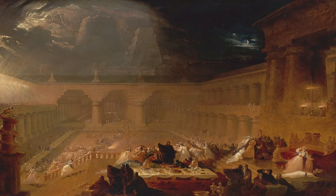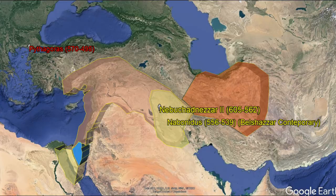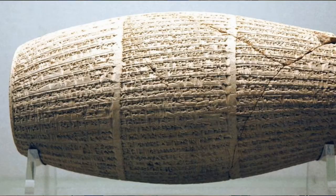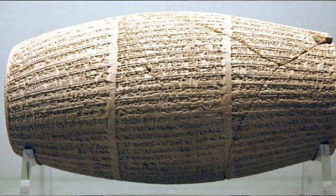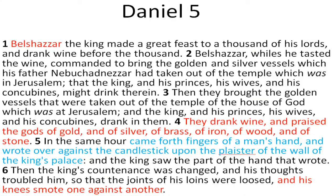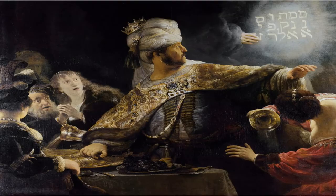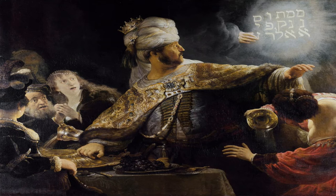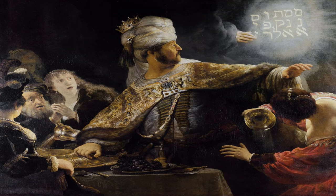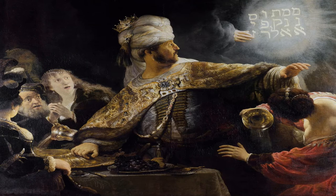We have the story of the writing on the wall, very familiar in the Bible. We see the character Belshazzar, a contemporary of Nabonidus, 556 to 539. We also have Belshazzar on Nabonidus' cylinder — so Belshazzar is in two places: in the archaeology and in the Bible. 'Belshazzar the king made a great feast for a thousand of his lords and drank wine before the thousand. Belshazzar, while he tasted the wine, commanded to bring the golden and silver vessels which his father Nebuchadnezzar had taken out of the temple in Jerusalem, that the king and his princes, his wives and his concubines, might drink therein.' In the same hour, in verse 5, came forth fingers of a man's hand and wrote on the plaster of the wall of the king's palace. And the king saw the part of the hand that wrote.